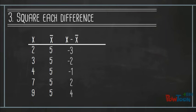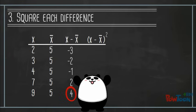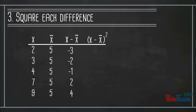The third step is to square each difference. This makes all the differences positive so they don't cancel each other out, and it also magnifies larger differences and minimizes smaller differences. Negative 3 squared equals 9, negative 2 squared equals 4, negative 1 squared equals 1, 2 squared equals 4, and 4 squared equals 16.